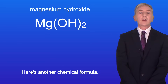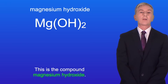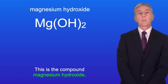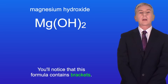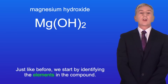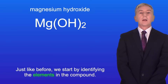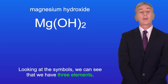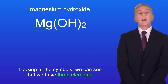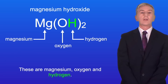Here's another chemical formula — this is the compound magnesium hydroxide. You'll notice that this formula contains brackets, so let's see what those mean. Just like before, we start by identifying the elements in the compound. Looking at the symbols we can see that we have three elements: magnesium, oxygen, and hydrogen.